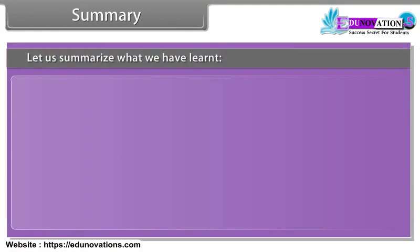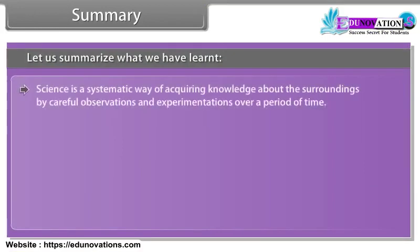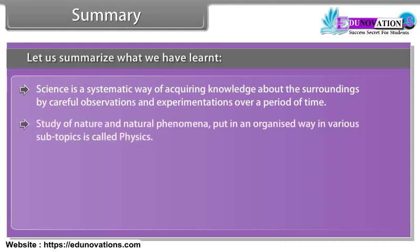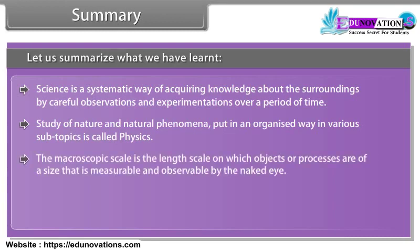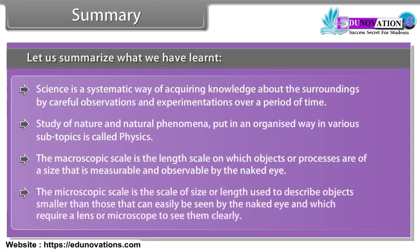Let us summarize what we have learnt. Science is a systematic way of acquiring knowledge about the surroundings by careful observations and experimentations over a period of time. The study of nature and natural phenomena put in an organized way in various subtopics is called physics. The macroscopic scale is the length scale on which objects or processes are of a size that is measurable and observable by the naked eye. The microscopic scale is the scale of size or length used to describe objects smaller than those that can easily be seen by the naked eye, and which require a lens or microscope to see them clearly.